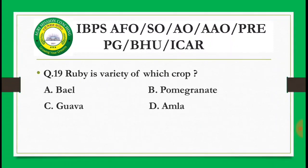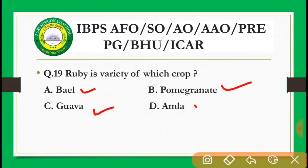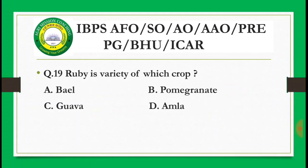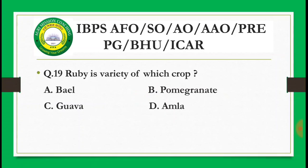Next question: Ruby is a variety of which crop? Options are: bael, pomegranate, guava, amla. Ruby is a variety of pomegranate (anaar) — you should have studied this. It is a variety of pomegranate.